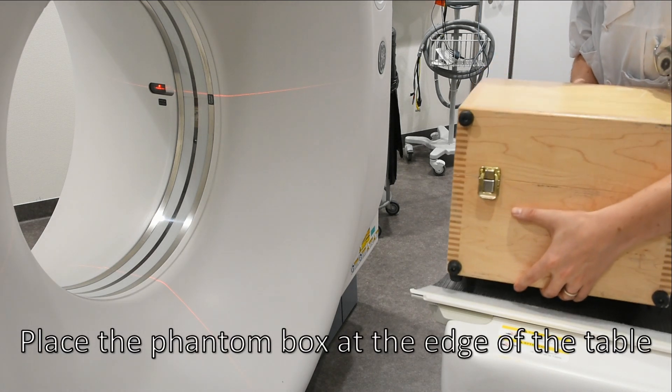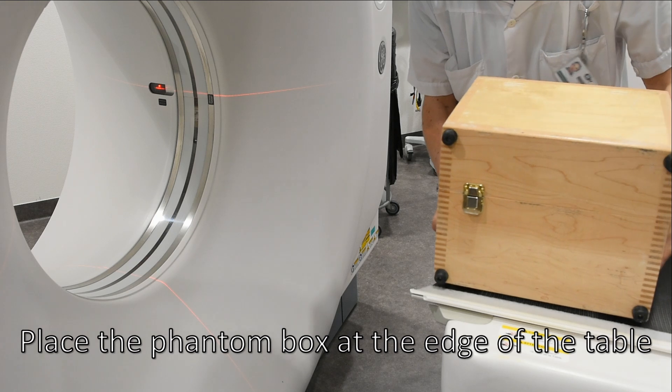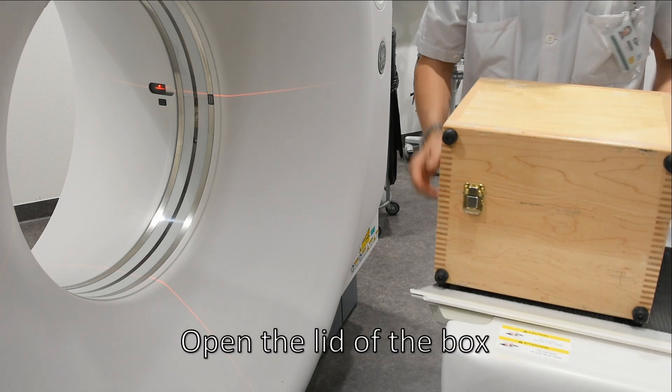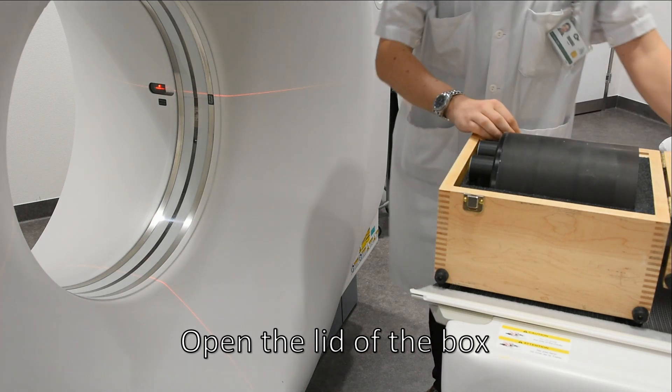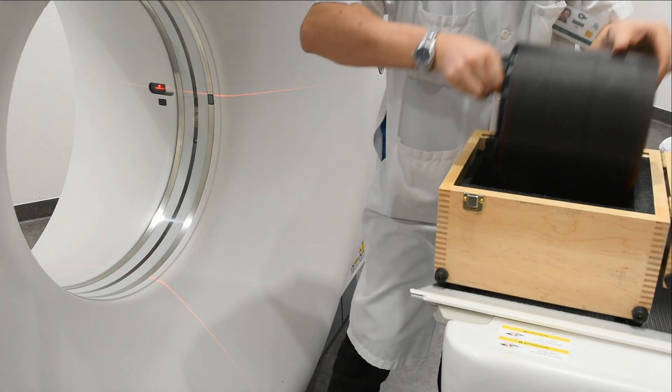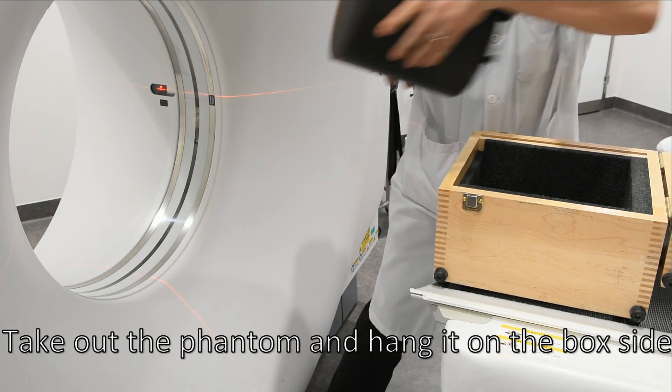Place the phantom box at the edge of the table. Open the lid of the box. Take out the phantom and hang it on the box side.